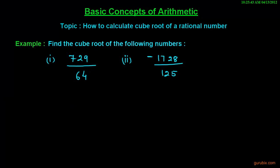Welcome friends. In this video we shall learn how to calculate cube root of a rational number, and we shall learn this technique by an example. The example is as follows: find the cube root of the following numbers, and this example has two parts. In part 1 we are given a rational number 729 over 64, and in part 2 we are given a rational number minus 1728 over 125.